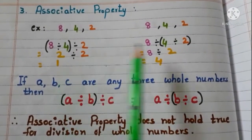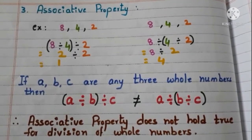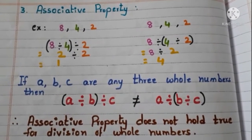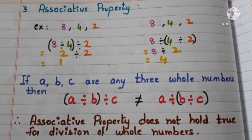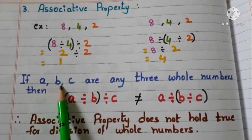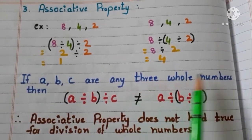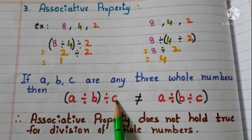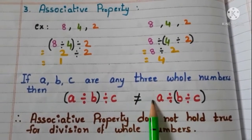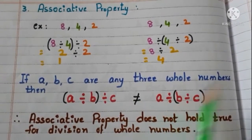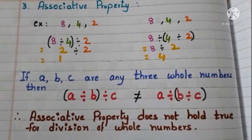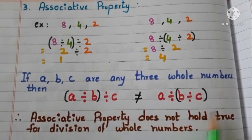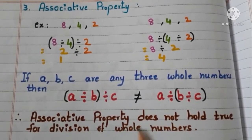See here we are getting different answers. When we change the grouping and divide, we are not getting the same answers. If a, b, c are any 3 whole numbers, then (a divided by b) divided by c is not equal to a divided by (b divided by c). Therefore we can conclude that associative property does not hold true for division of whole numbers.